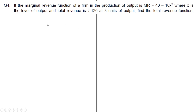Moving on to the next question. If the marginal revenue function of a firm in the production of output is marginal revenue equal to 40 minus 10x squared, where x is the level of output, and total revenue is rupees 120 at 3 units of output, find the total revenue function.